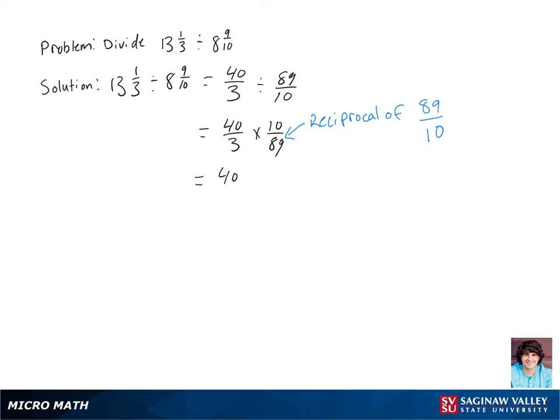Now multiply the numerators and the denominators, and we're going to get 400 over 267.